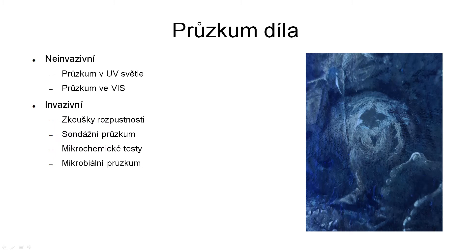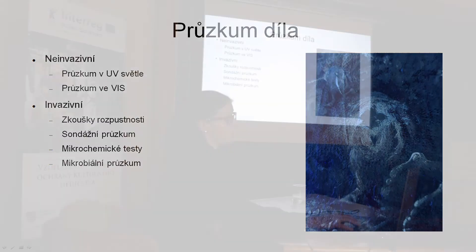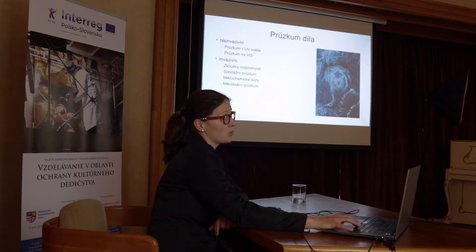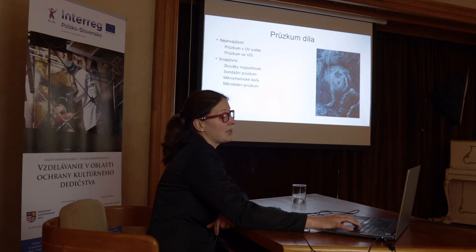Takže jsme využívali hlavně neinvazivní metody, jako jsou metody nasvícení díla v různých spektrech, abychom se dozvěděli co nejvíce o sekundárních vrstvách, přemalbách, tmelech. Ty jsme doplňovali dále mikrochemickým průzkumem, kdy na malém odebraném vzorku zkoušíte speciální mikrochemické testy – zakápnete vzoreček určitou chemikálií a podle toho, jak se rozpustí, za jaký čas a co vám v mikroskopu zbyde, poznáte, o jaký materiál se jedná.